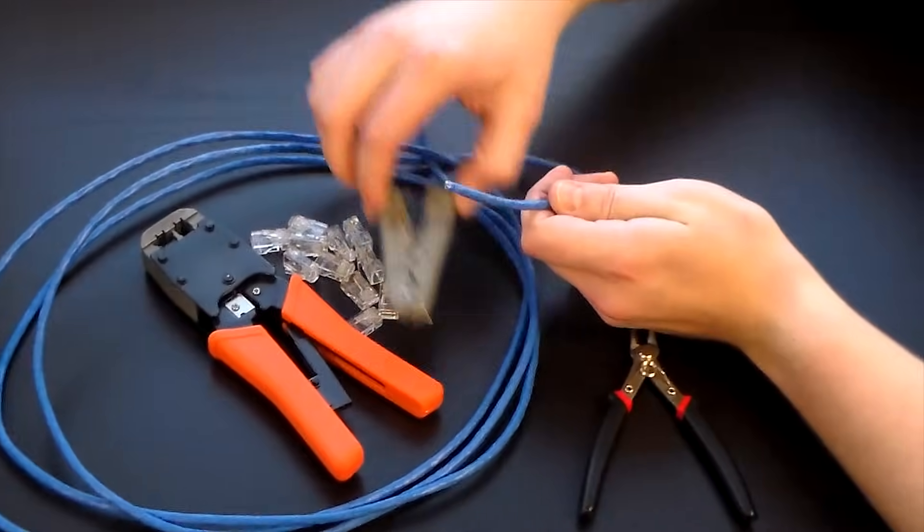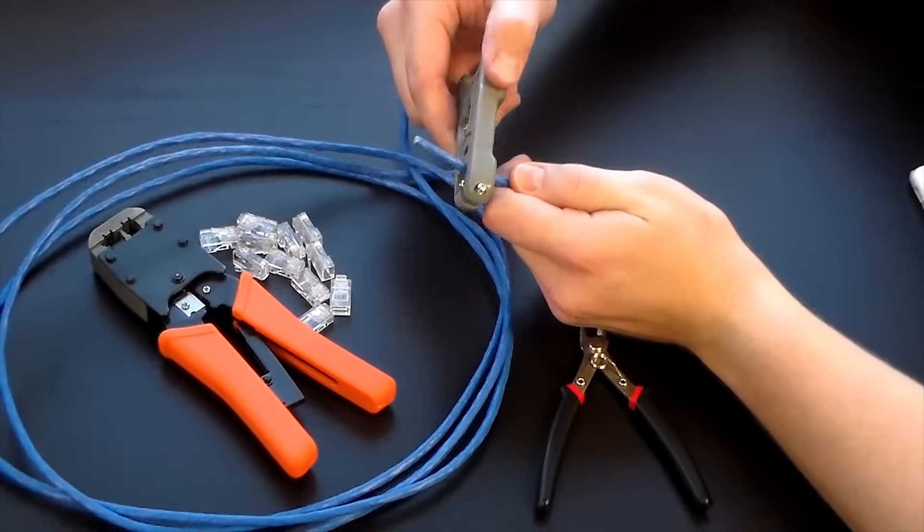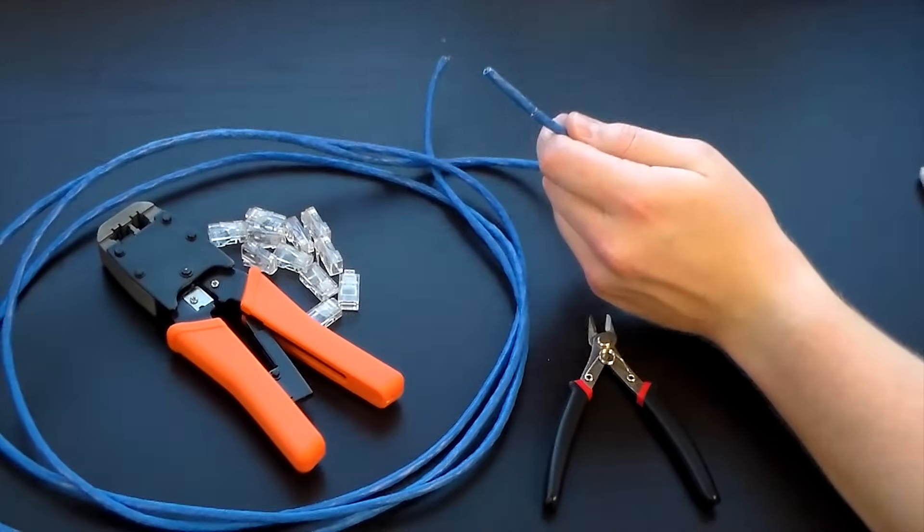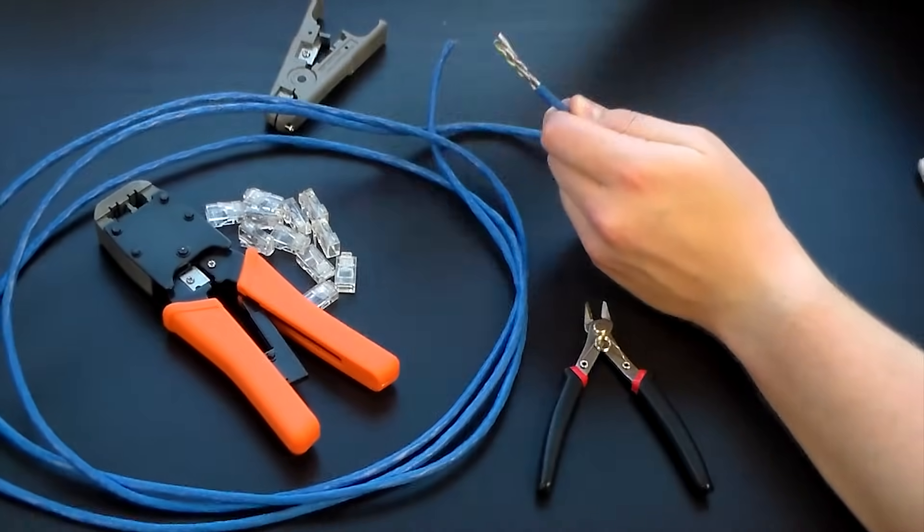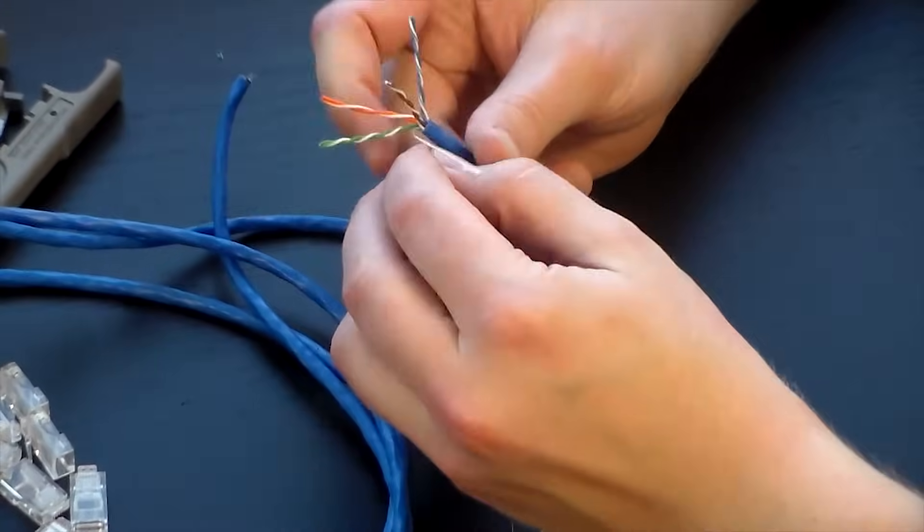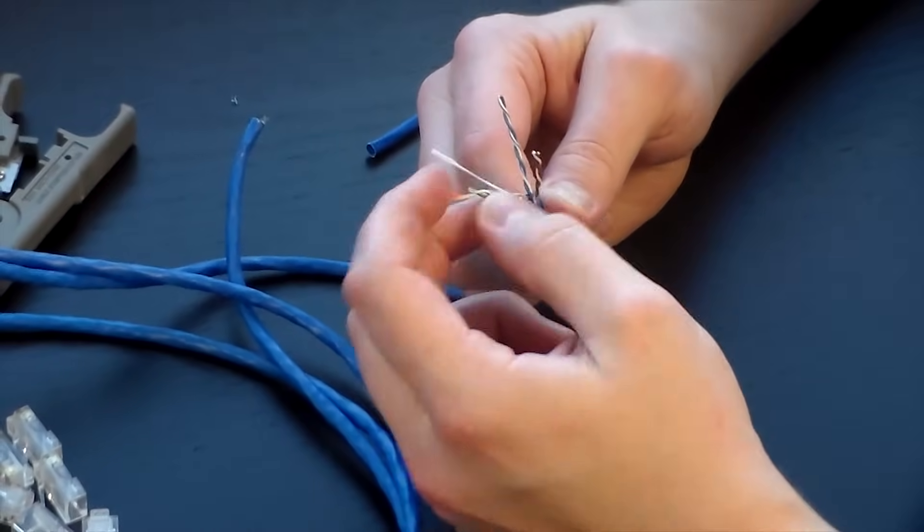Hey guys, today we're going to crimp an ethernet cable. First, you want to remove the sheathing on the wire using the wire stripper. Pull that sheathing off to expose the twisted pairs, then take a few minutes to separate each pair and untwist them.